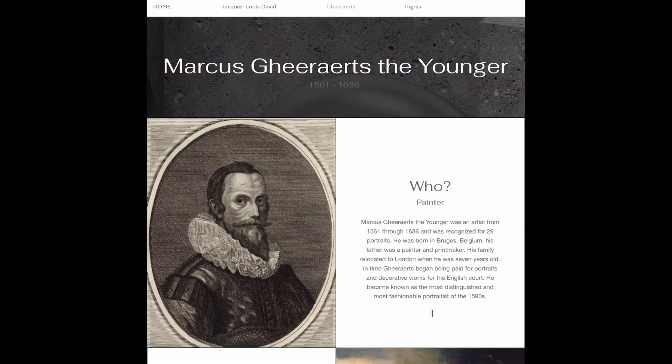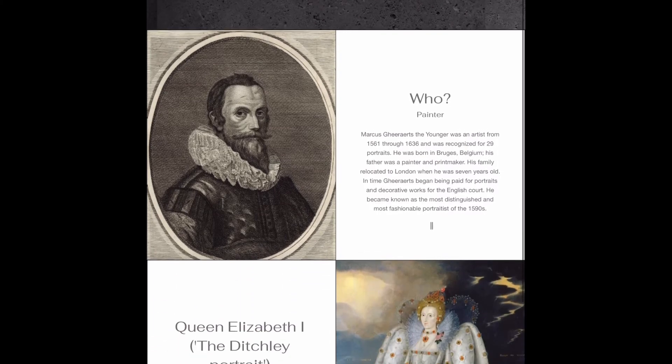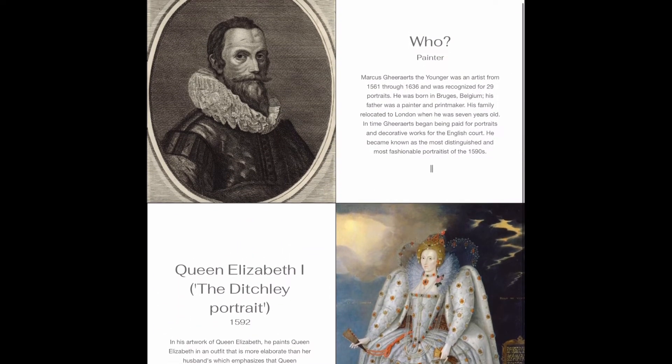The second artist we are looking at is Marcus Gheeraerts the Younger. He was an artist from 1561 through 1636 and was recognized for 29 portraits. He was born in Bruges, Belgium. His father was a painter and a printmaker. His family relocated to London when he was about seven years old, and in time he began to be paid for portraits and decorative works for the English court.